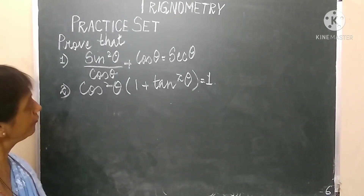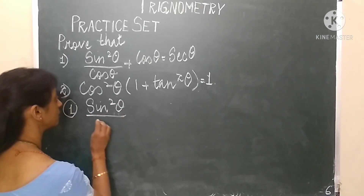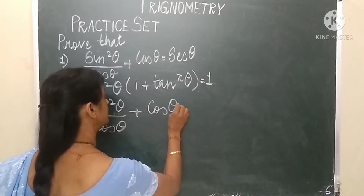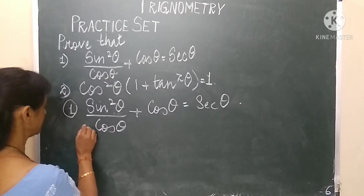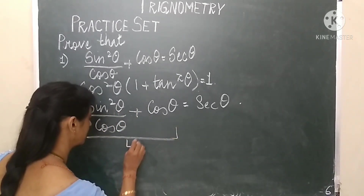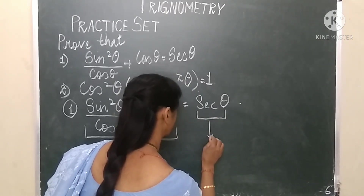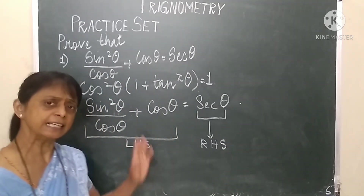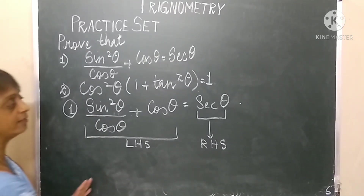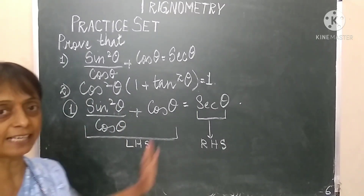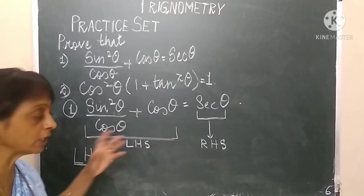Let's begin with the first problem: prove that sin²θ/cosθ + cosθ is equal to secθ. Here, sin²θ/cosθ + cosθ is the left hand side, and secθ is the right hand side. So let's start with the left hand side and write down the expression.